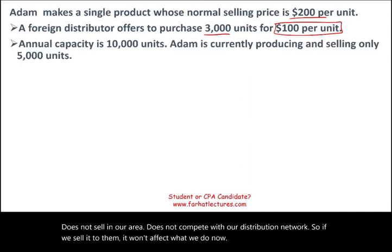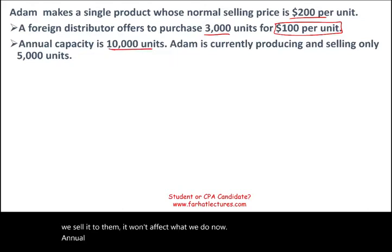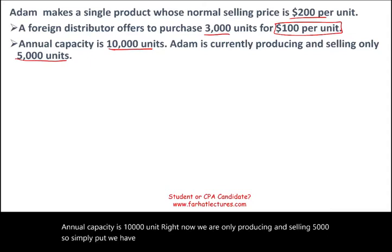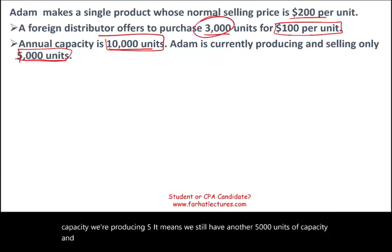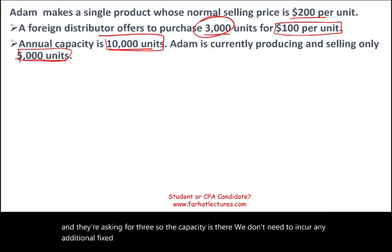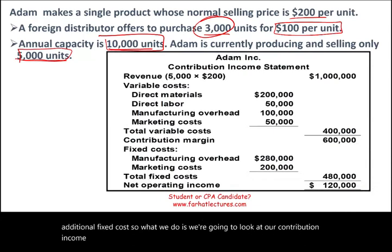Annual capacity is 10,000 units and right now we are only producing and selling 5,000. We have plenty of capacity — with a 10,000-unit capacity and producing five, we still have another 5,000 units of capacity available, and they're asking for 3,000. The capacity is there, so we don't need to incur any additional fixed cost. We'll look at our contribution income statement to see what we have.